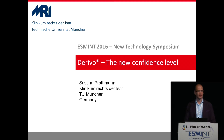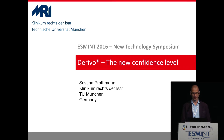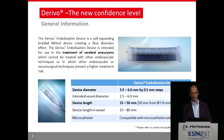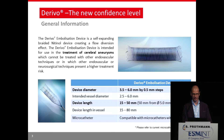Good morning everybody. Today I want to report on the very initial experience of the derivo flow diverter. It has some very interesting new features I want to show you. The derivo device is intended for vessel diameters between 2.5 and 6 millimeters and it is placed via a 0.027 microcatheter.